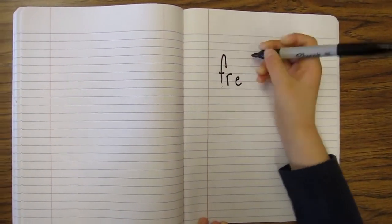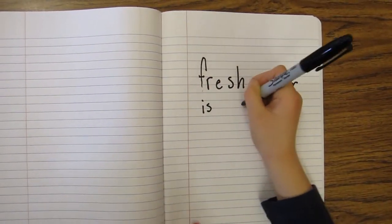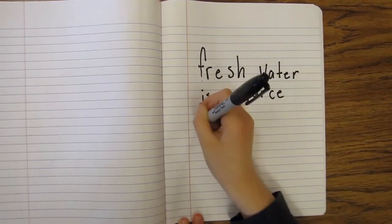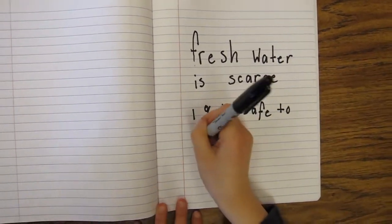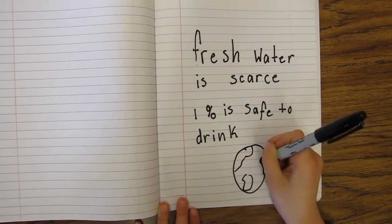But even though our water moves in a cycle, we can only use safe, fresh water. And fresh water is scarce. Only 1% of the water on Earth is safe to drink.